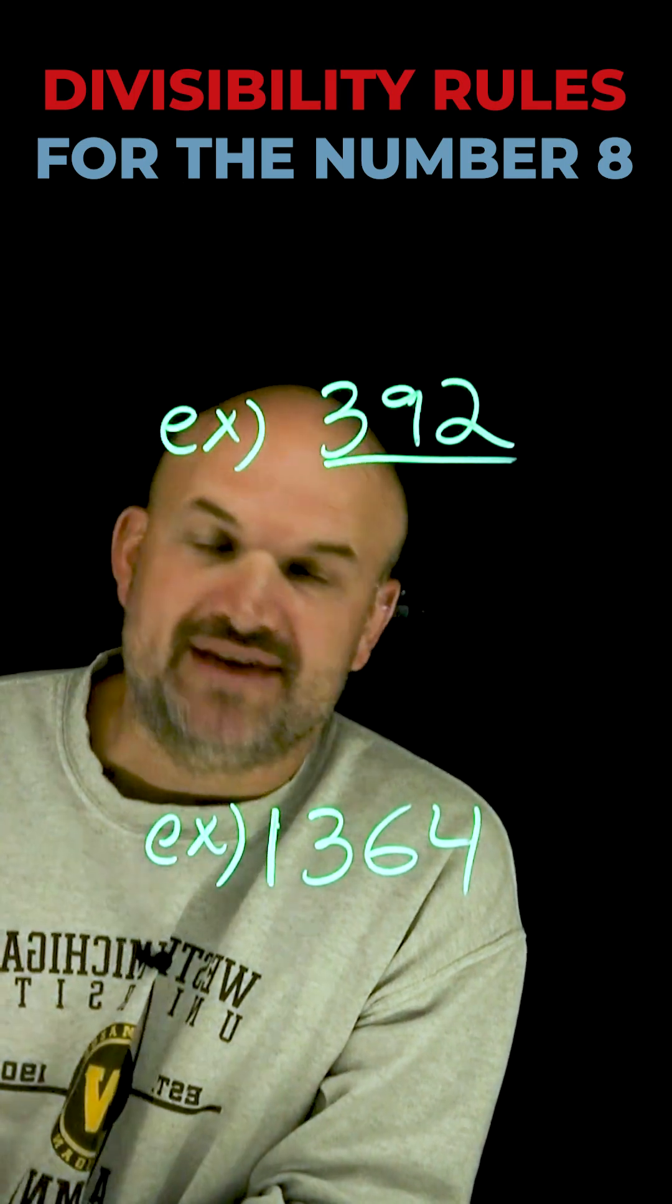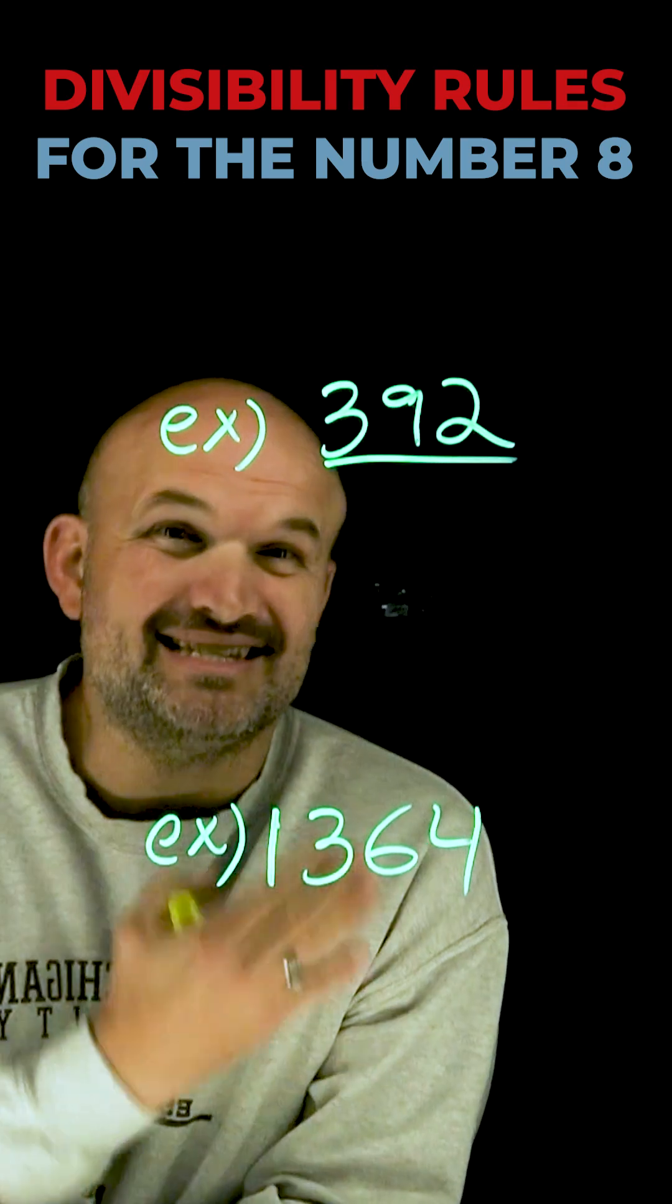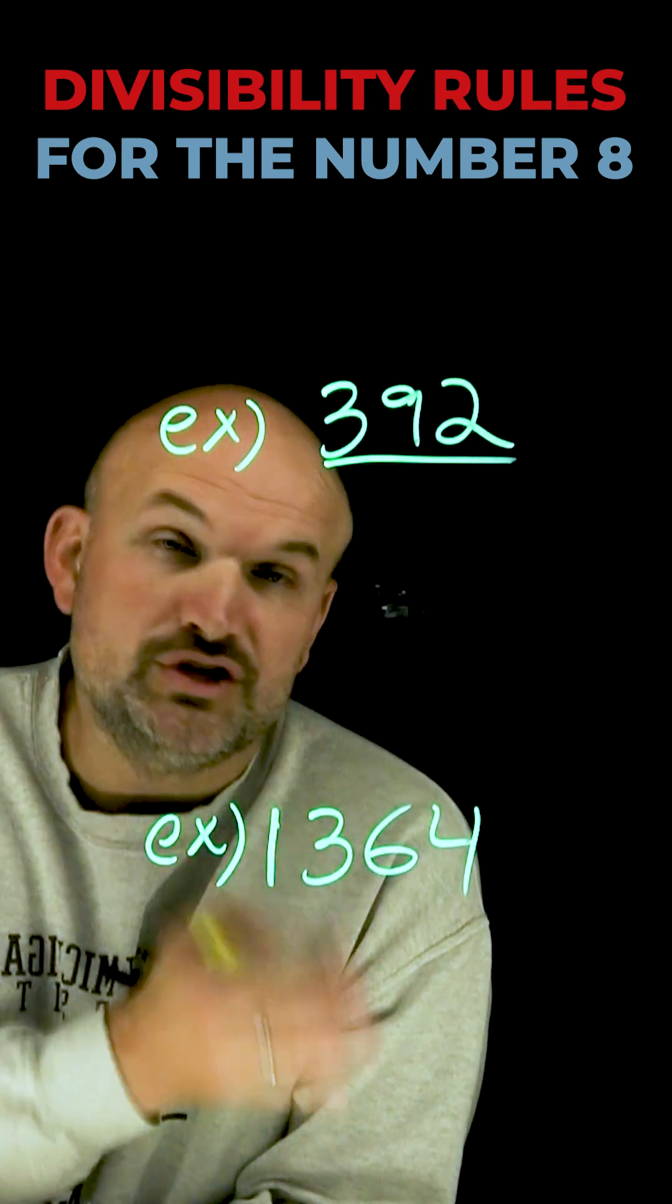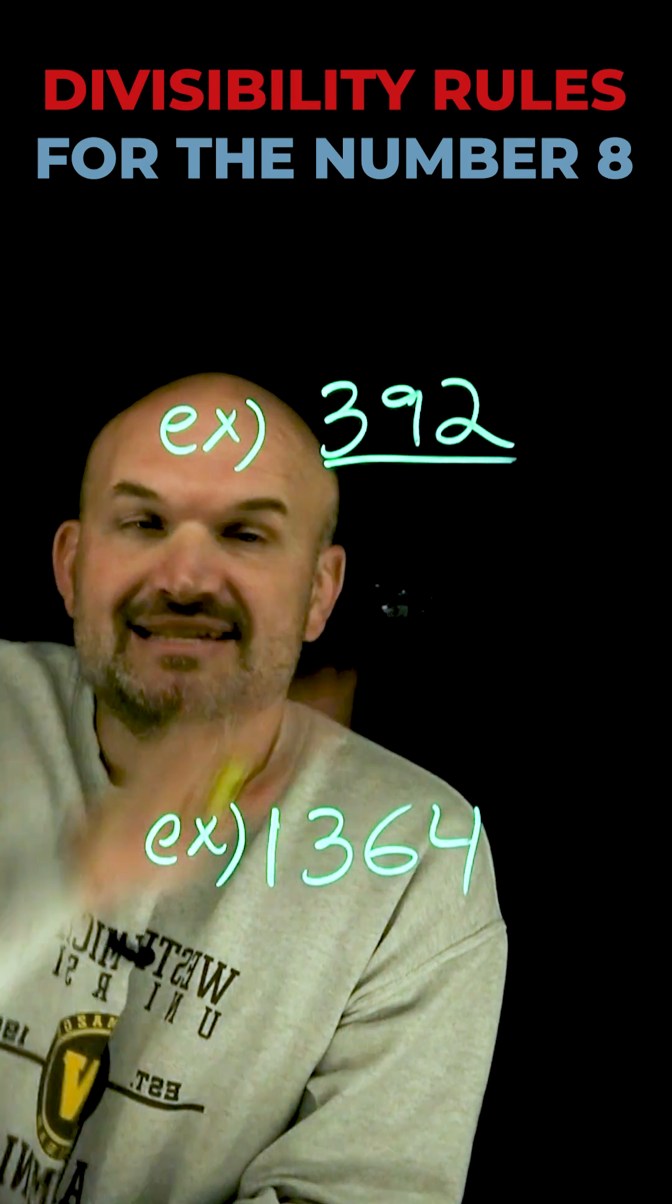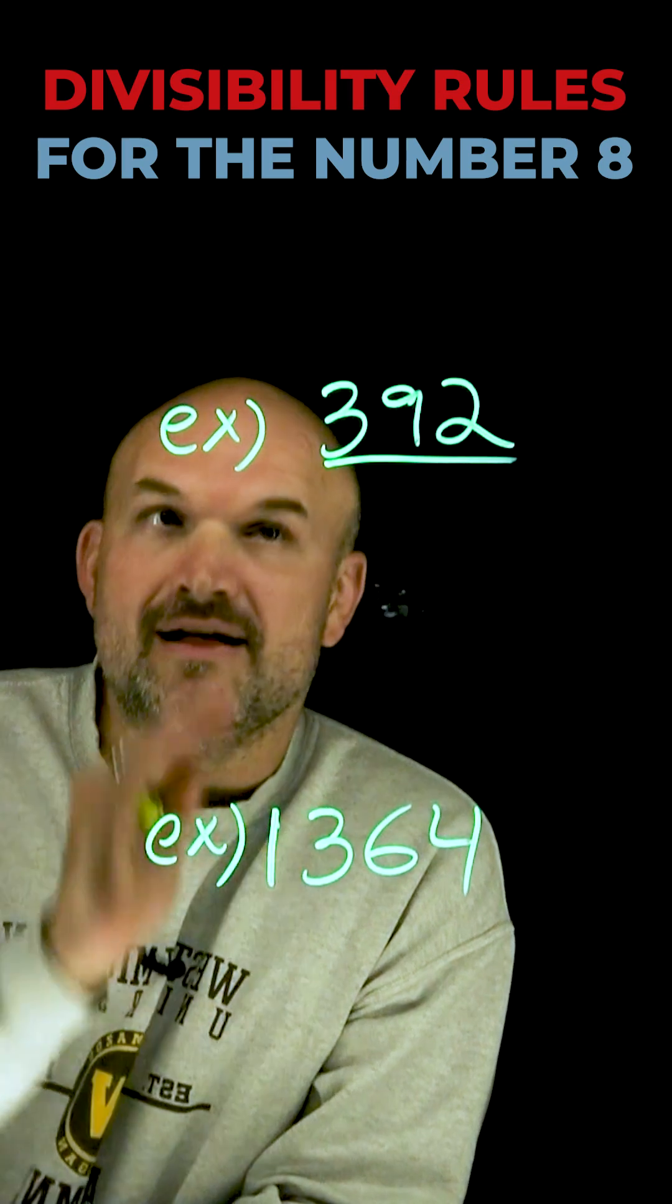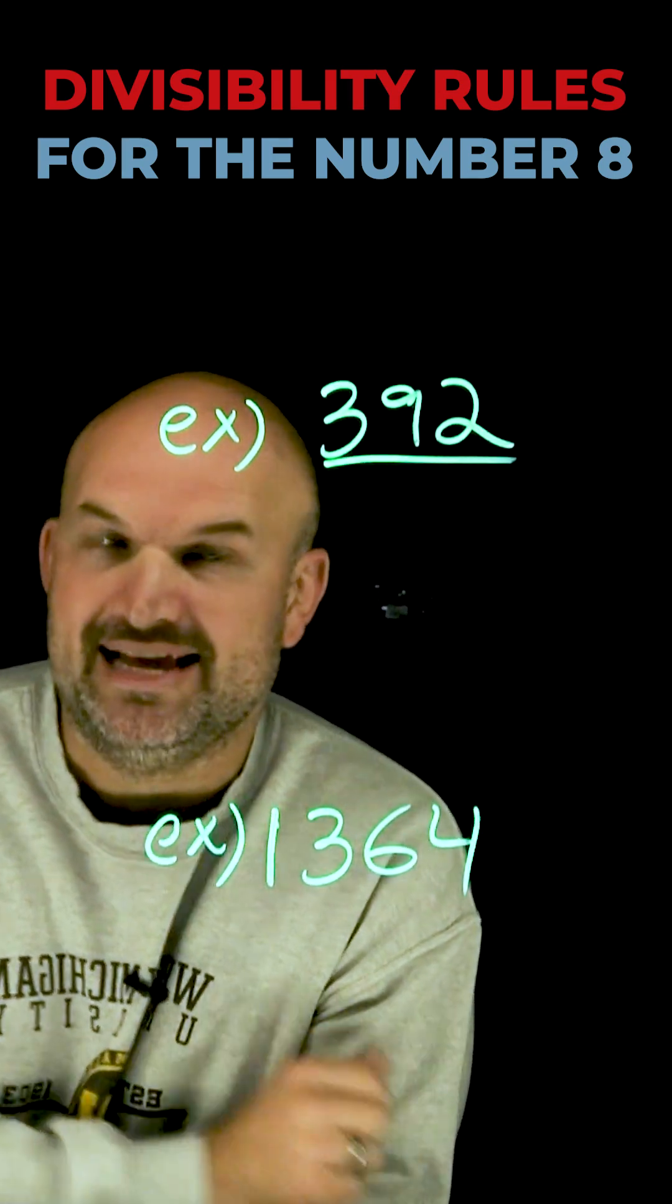We could think about multiples of 8. But another way I like to think about it is dividing by 8 is the same thing as dividing by 2 three times. Dividing by 2 cubed, or 2 cubed, is equal to 8. So, if I can take this number and divide it by 2 three times, and I get a value there, then I know that 392 is divisible by 8.